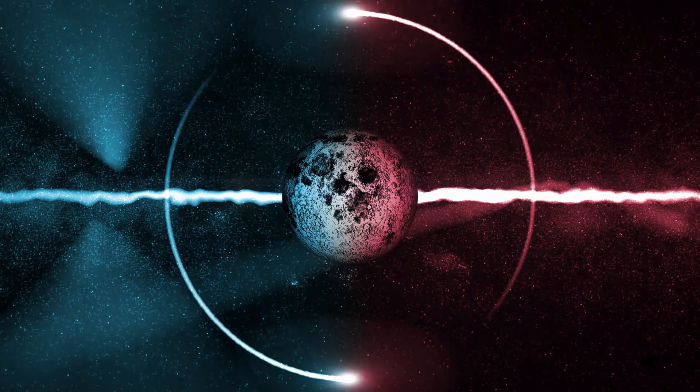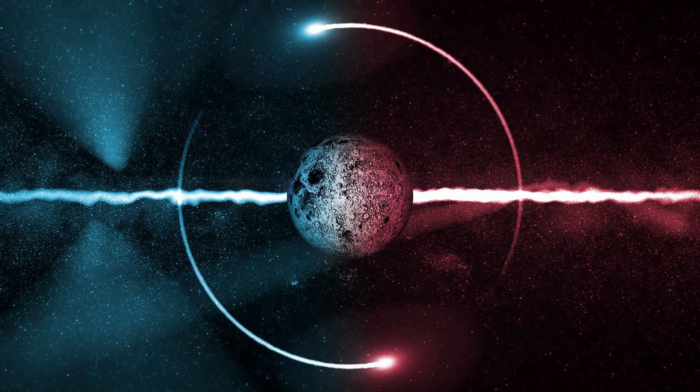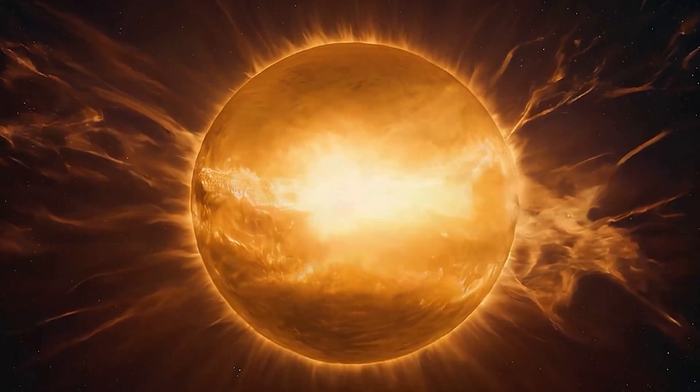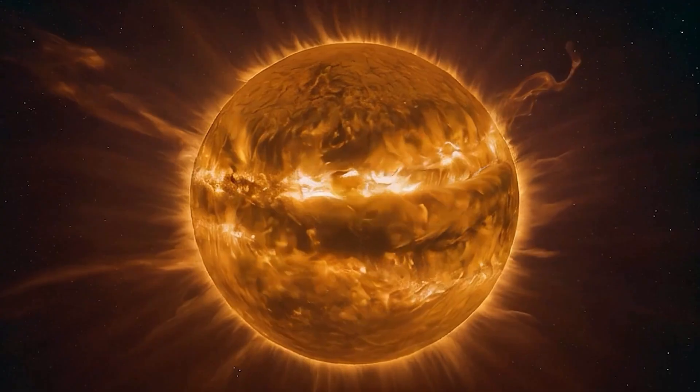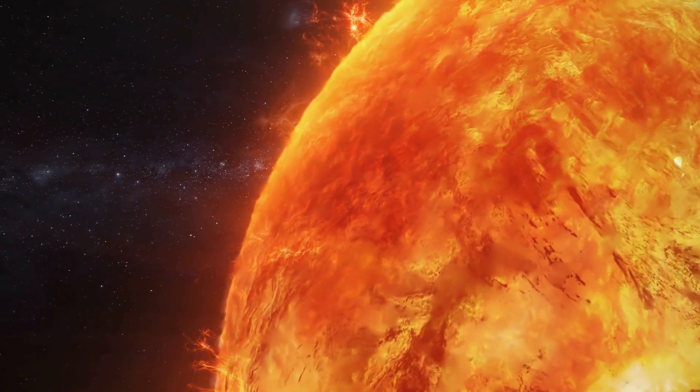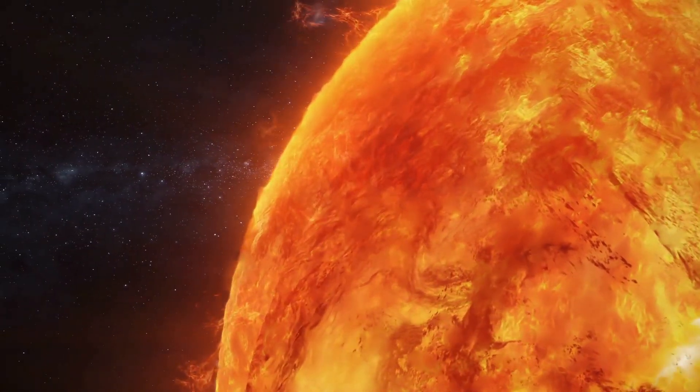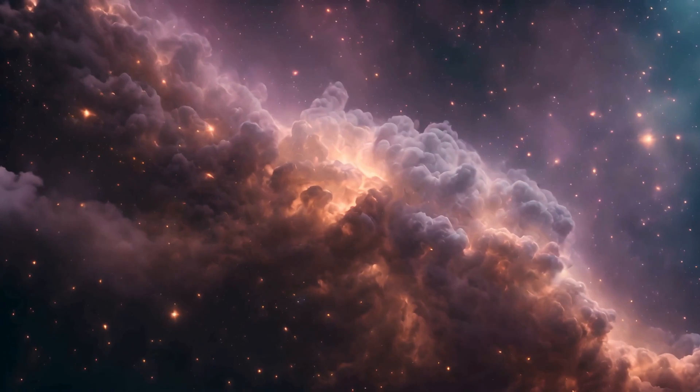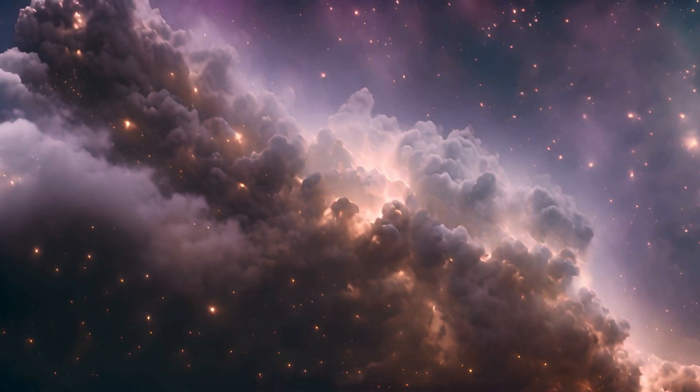Some exoplanets even wander freely, untethered to any star, like rebel voyagers in space. However, among them all, Proxima Centauri b stands out as a particularly striking and intriguing planet with a year that lasts only 11.2 Earth days and a distance from its star that is multiple times closer than Earth is to the Sun. Almost certainly, one side of the planet is constantly bathed in sunlight while the opposite side remains in perpetual darkness.